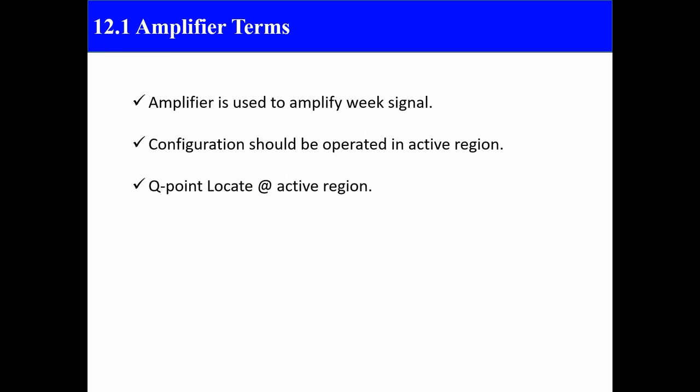In amplifier terms, an amplifier is basically used to amplify a weak signal. Whenever an amplifier is used to amplify a weak signal in any of the configurations like CE, CB, or CC, the Q point is fixed in the active region.